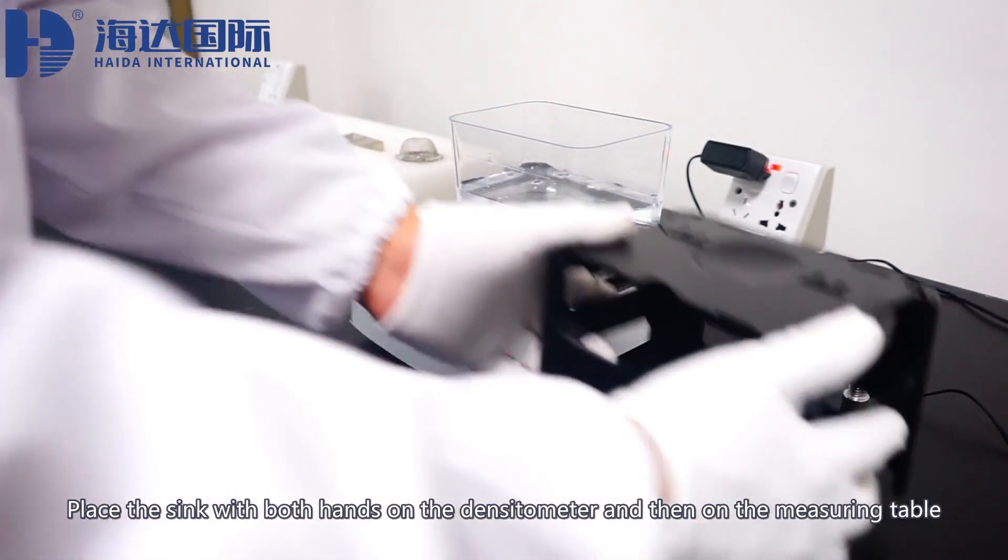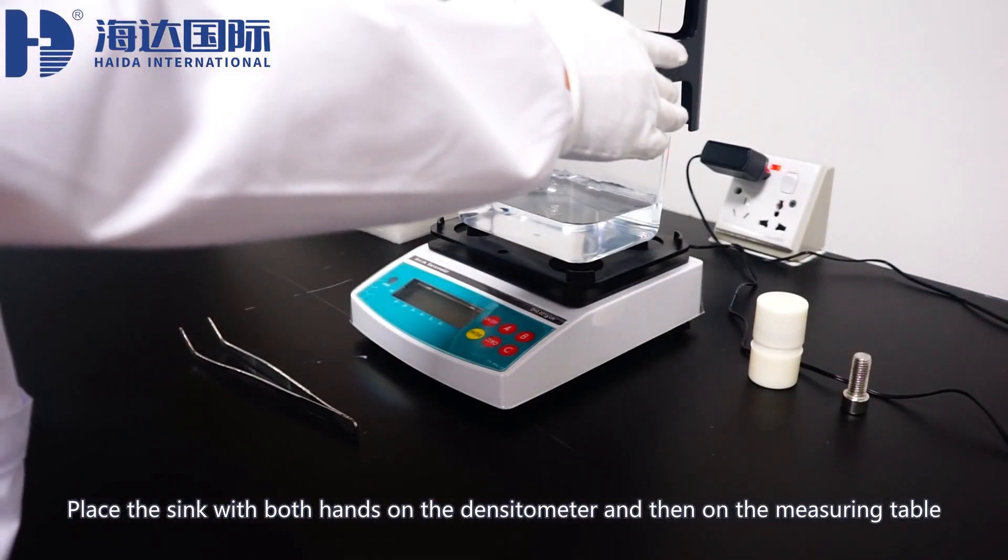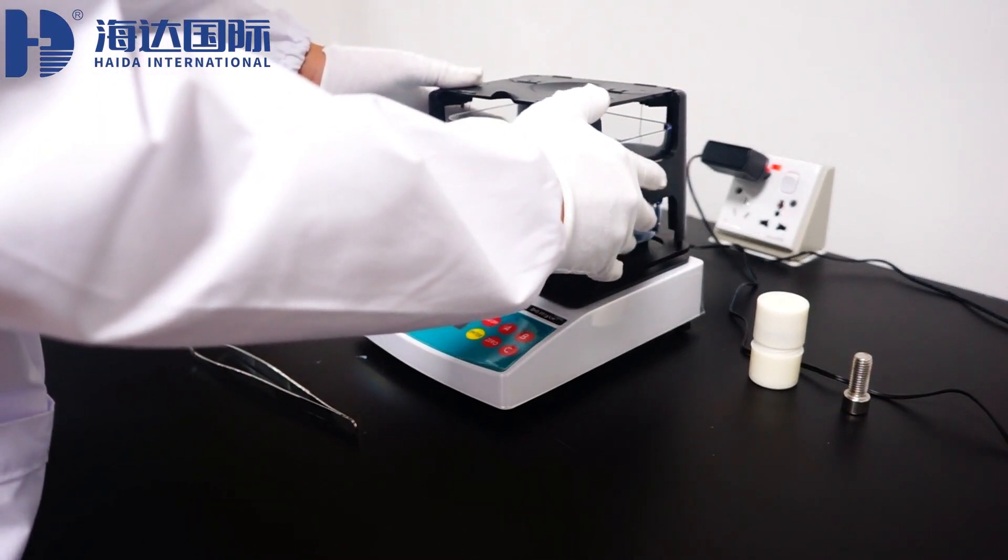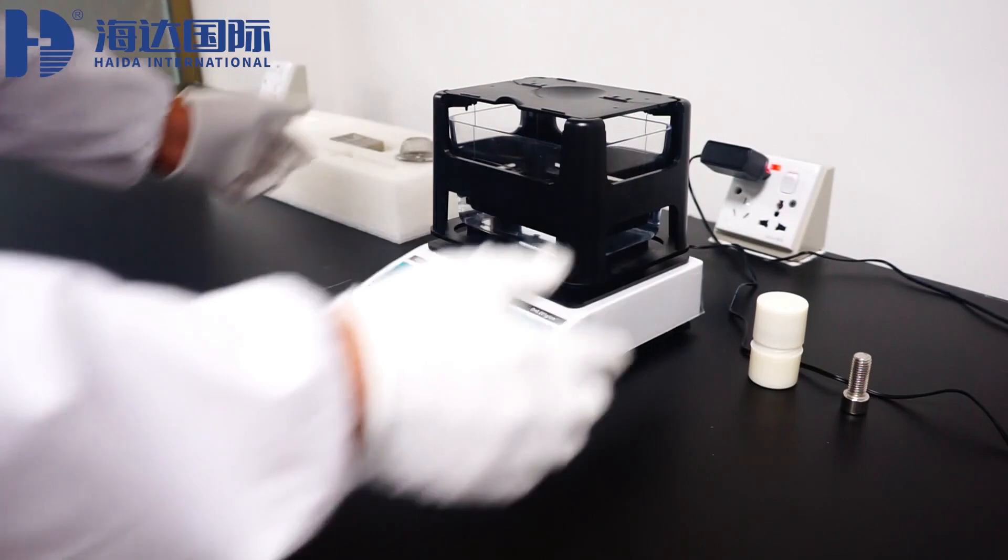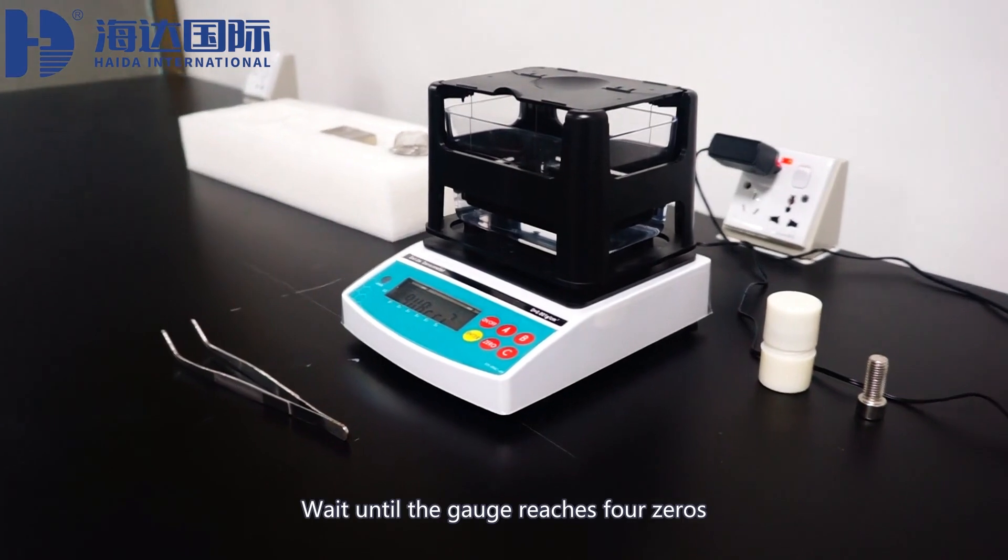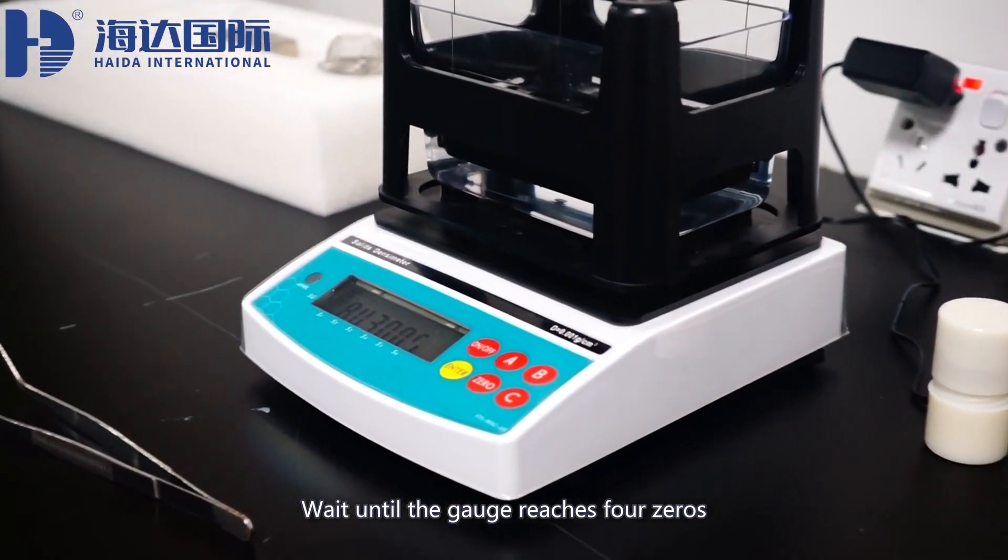Place the sink with both hands on the densitometer and then on the measuring table. Click the power on button. Wait until the gauge reaches zero.